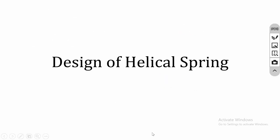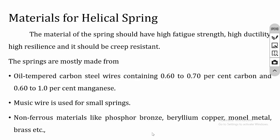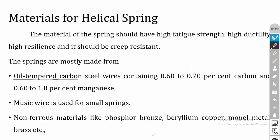Now the design of helical spring, starting with the helical compression spring. The helical spring is made of oil-tempered carbon steel containing 0.6 to 0.7 percent carbon and 0.6 to 1 percent manganese. For small springs, music wire is used. In some applications, non-ferrous materials like phosphor bronze, beryllium copper, and monel metal or brass are used.